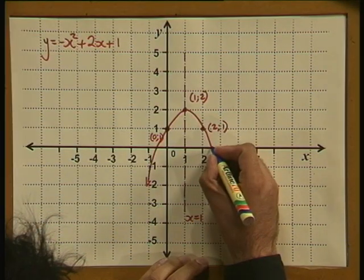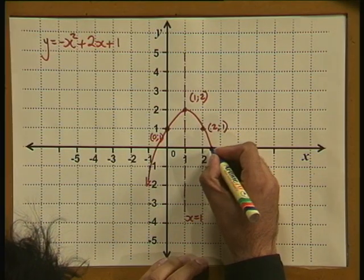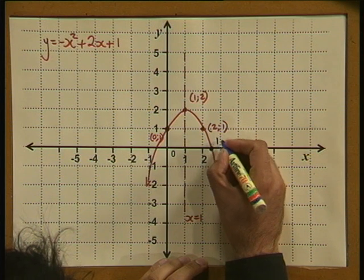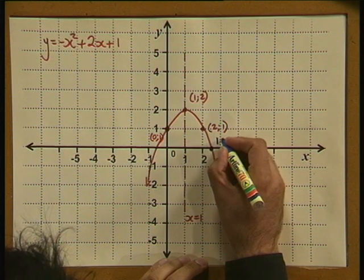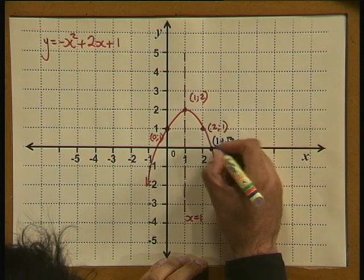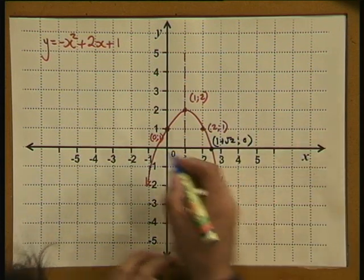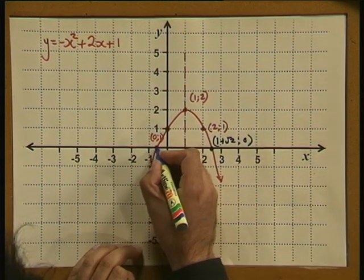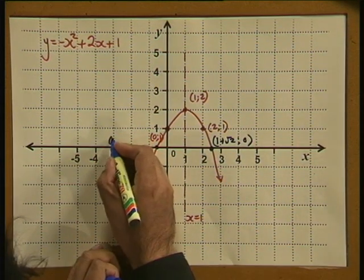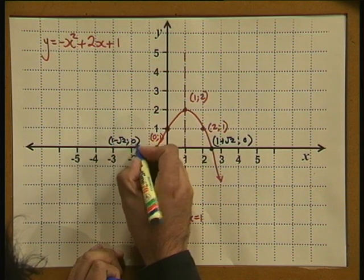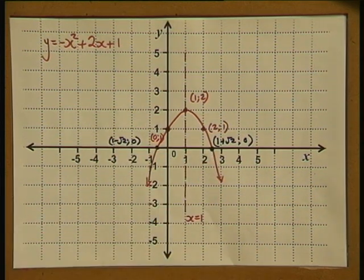Looking at what this means on the graph: one x-intercept is at x equals 1 plus root 2 with y equals 0, and the other x-intercept is at x equals 1 minus root 2 with y equals 0.